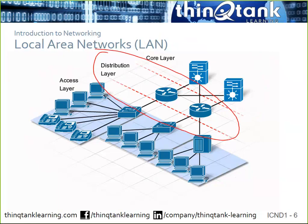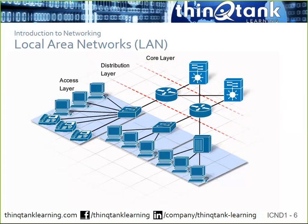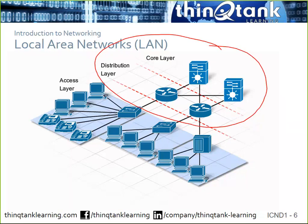The distribution layer is where we design all the intelligence — things like policy-based routing, inter-VLAN routing, QoS policies for quality of service, access control, and security. This is the brains of your network. Often companies will collapse the core and distribution together into what's called a collapsed core when they don't have the budget or need for separate layers.